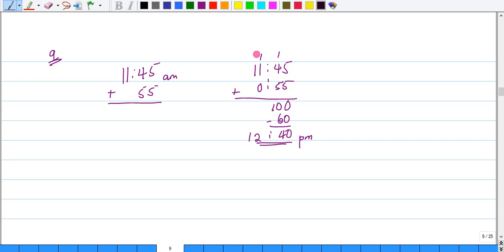Okay, so if I take out 60 minutes out of 100 minutes, I'll have 40 minutes. I have less than an hour, so I can keep that on the minute side.